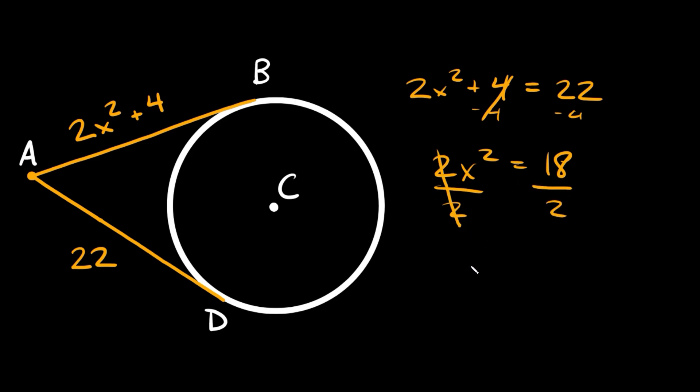Those cancel out. So we're left with x squared is equal to 9. So to solve for x here we can simply take the square root of both sides. Those cancel out and we simply get that x is equal to plus or minus the square root of 9 which is 3.